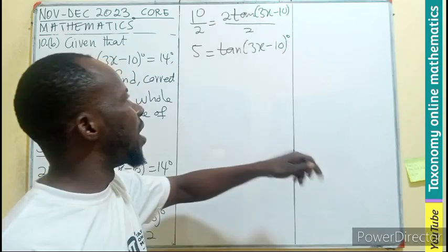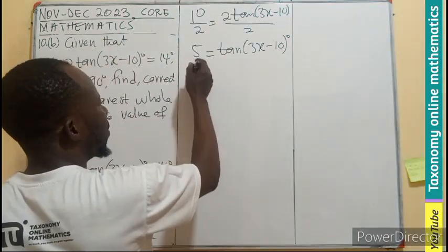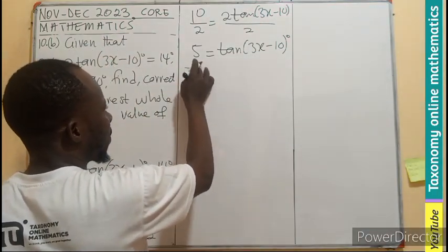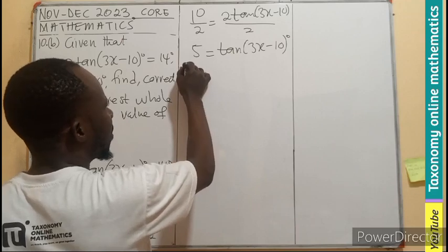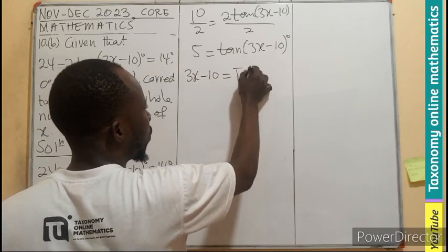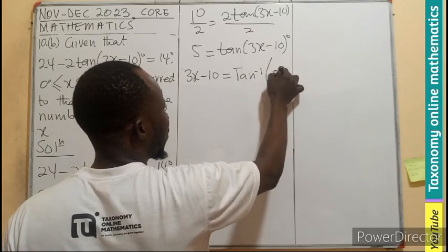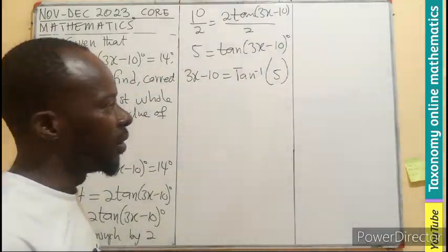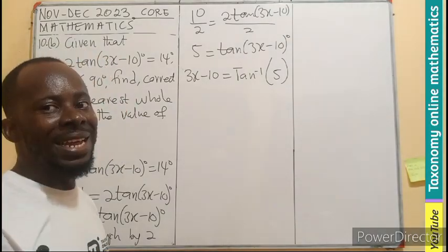Meaning finding the tan inverse of 5. Meaning I'll be having 3x minus 10 equals the tan inverse of 5. That is divided through by the tan.